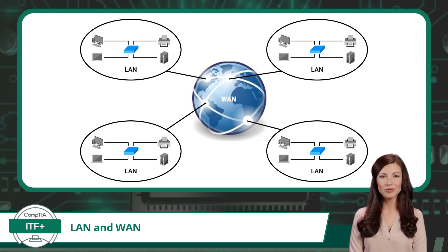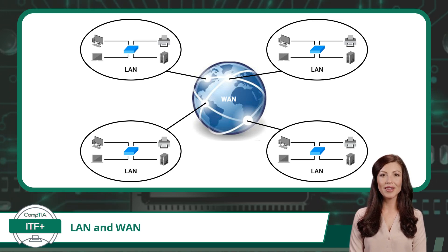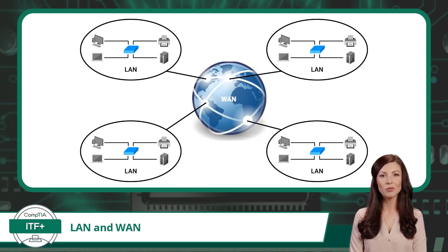Together, LANs and WANs create a comprehensive network architecture that enables seamless and scalable communication across both local and global distances. And there you have it: an introduction to LANs, WLANs, WANs, and WWANs — the fundamental network types in computer networking.